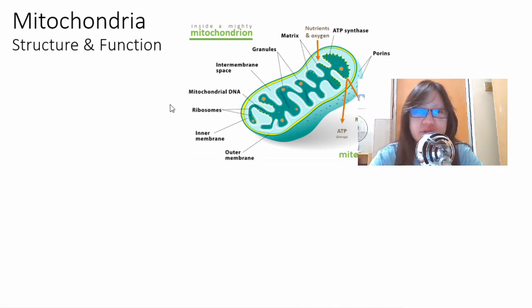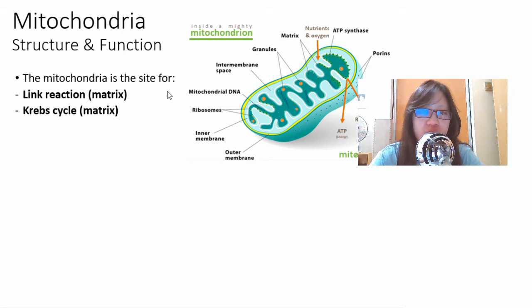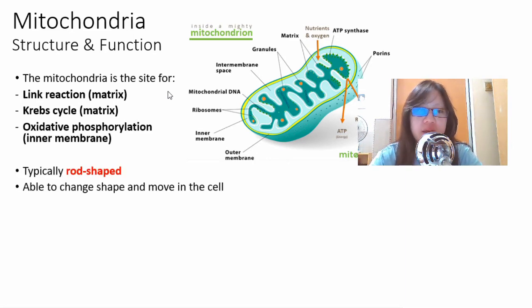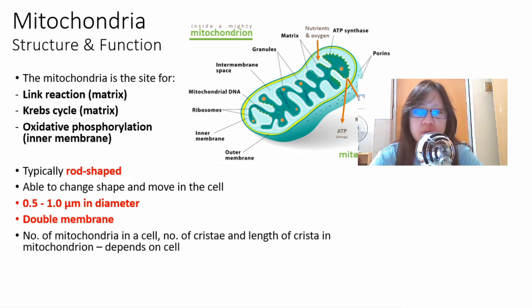Let's look at the structure and function of mitochondria and how the structure is adapted for its function. Let's have a little recap about mitochondria. We just learned that it is the site for link reaction, Krebs cycle and oxidative phosphorylation. Recall your chapter 1, it is rod-shaped, able to change shape and move in the cell. It's around 0.5 to 1.0 micrometer, slightly smaller than the chloroplast. You can see it under a very powerful light microscope. It has a double membrane, inner outer and also a matrix. They have ribosomes, circular DNA, and some granules.